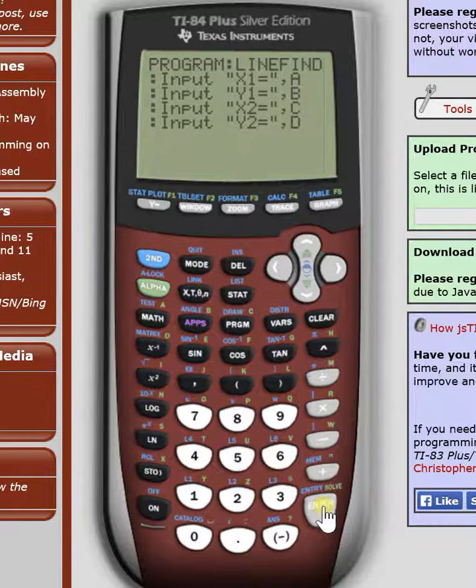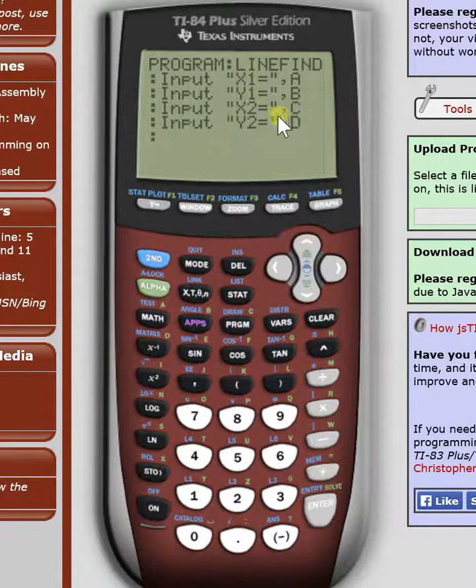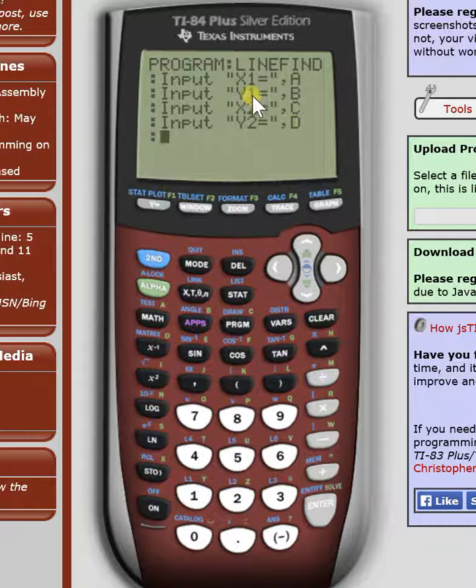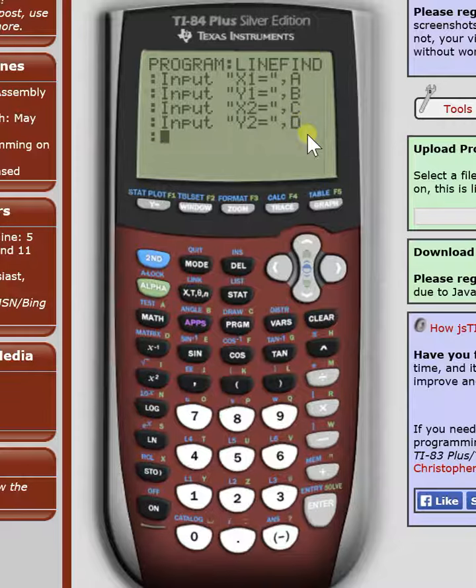So that's it for our inputs. Hit enter. Now, for this, we're going to use the slope equation. So y2 minus y1 over x2 minus x1. We're going to use our letters that we assign the numbers to.